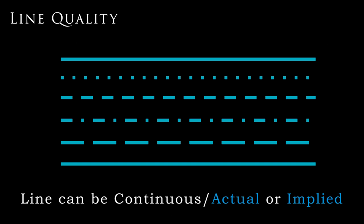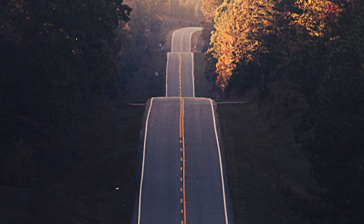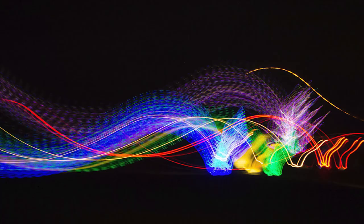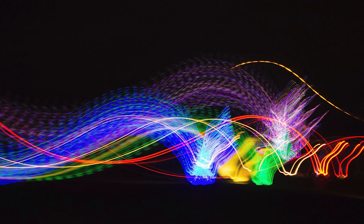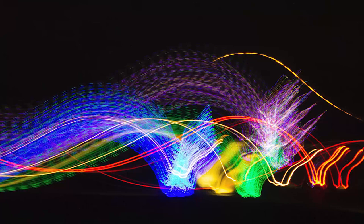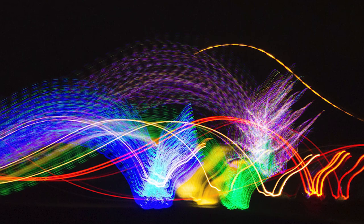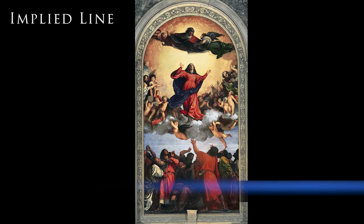Line can also be continuous or implied. A continuous line is a very direct, visible connection between two points, but an implied line only gives you indications of a connection. Consider how road lines — whether actual or implied — direct where your car can and cannot go. Implied lines can actually be used as a powerful tool in art.